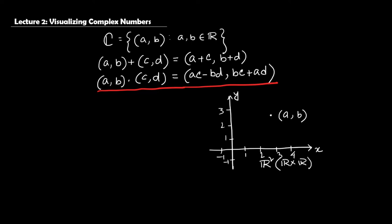Now the question is where and how we can plot complex numbers. Complex numbers are plotted in the complex plane, known as the Argand plane. It has a similar structure to R²: the horizontal axis is also a real line. But the vertical axis is totally different. In R² the unit distance in the vertical axis is one unit, whereas here we consider the unit distance in the vertical axis as J. So the markings become J, 2J, 3J, −J, and so on.